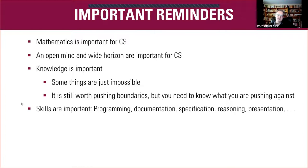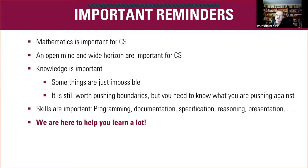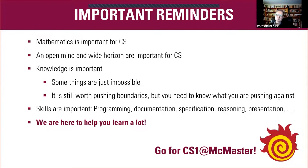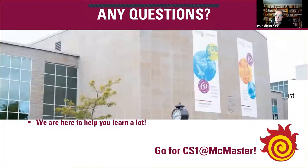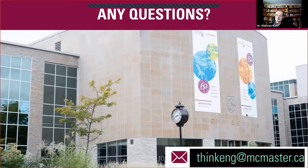After graduation, skills will be important — programming skills, documentation skills, specification skills, reasoning skills, presentation skills, and more general communication skills. We are here to help you learn a lot and acquire these skills; that's what the program is designed for. You are coming here to learn a lot and be successful afterwards. Go for Computer Science 1 at McMaster. If you have any questions, email thinkeng at mcmaster.ca and we will point you to more information about what might be waiting here for you.